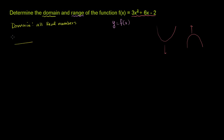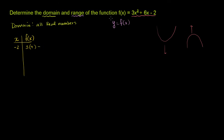There are ways to directly compute the vertex — negative b over 2a is the formula, which comes straight out of the quadratic formula from completing the square. But let's try some x values. When x is equal to negative 2, f of x is 3 times negative 2 squared, which is 4, plus 6 times negative 2, which is minus 12, minus 2. So this is 12 minus 12 minus 2, which equals negative 2.